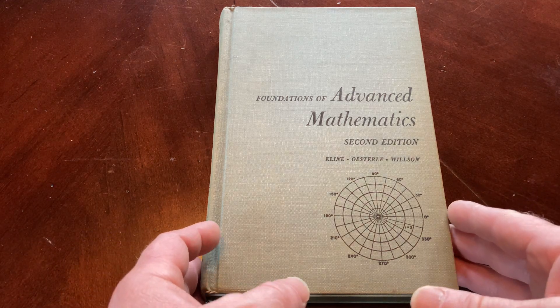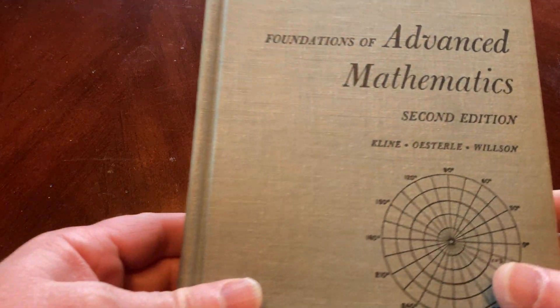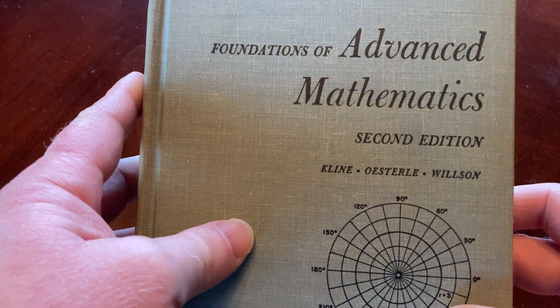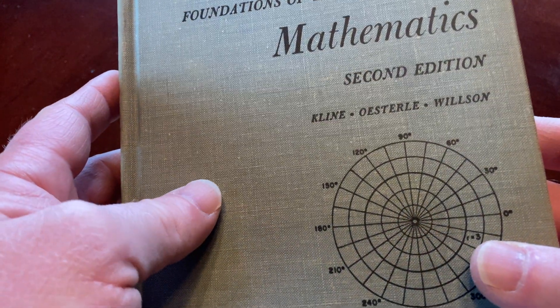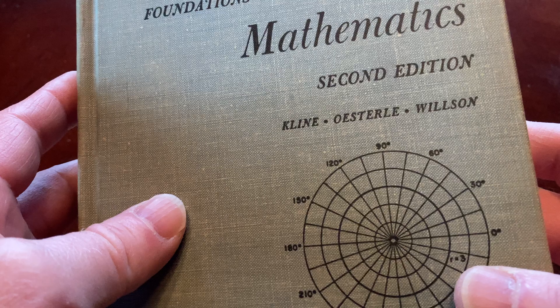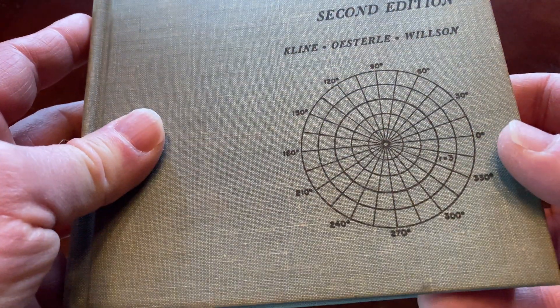This is a math book from the 60s. It's got a really cool cover. It's called Foundations of Mathematics. This is the second edition. It's by Klein, Ulsterl, and Wilson.